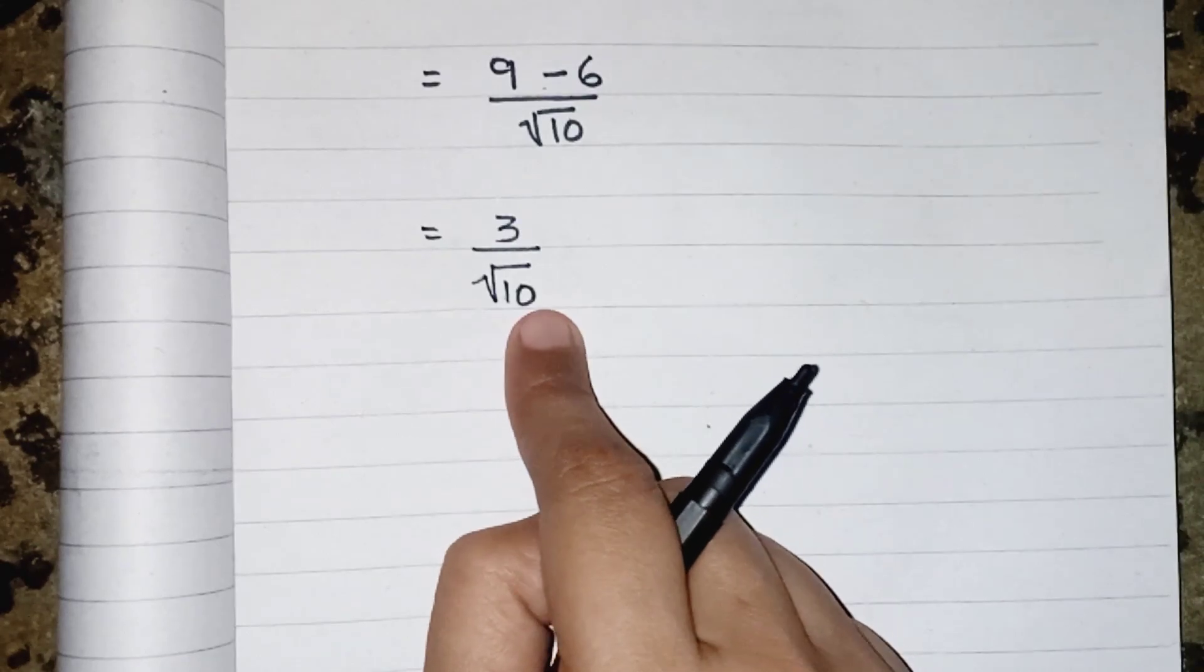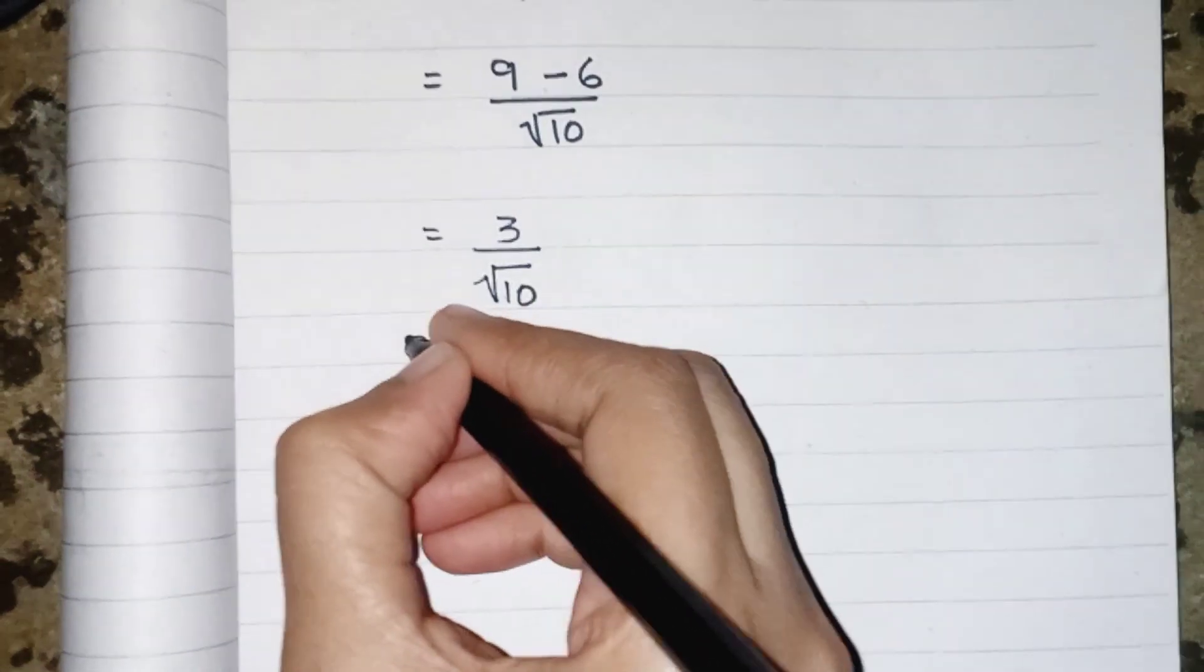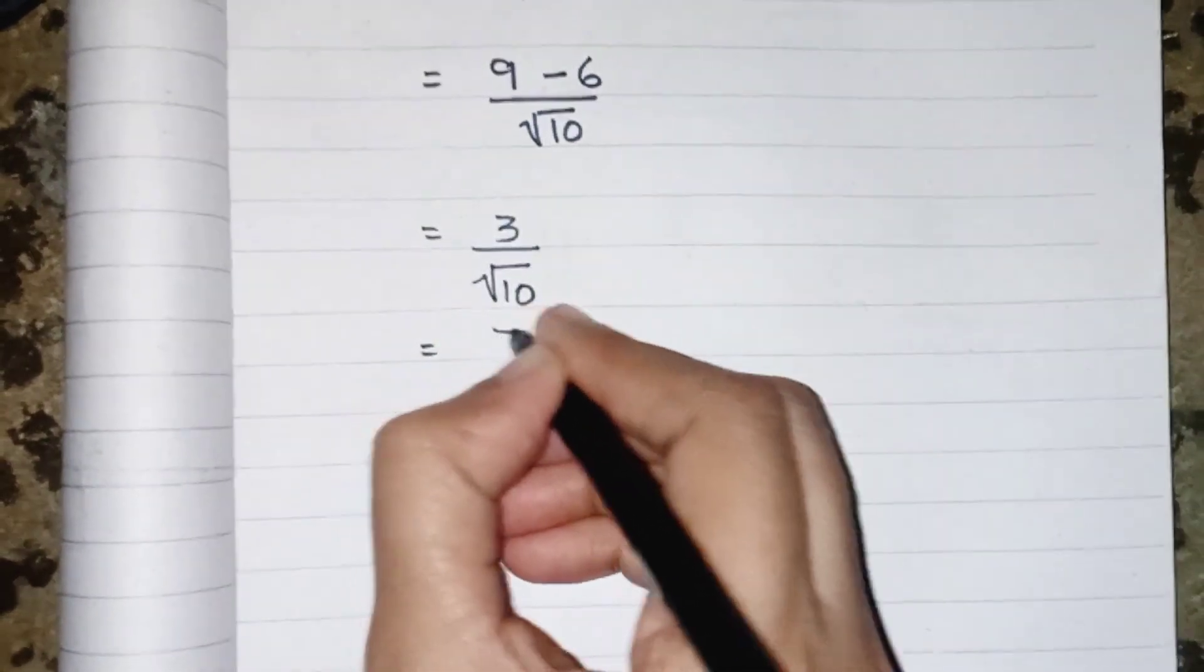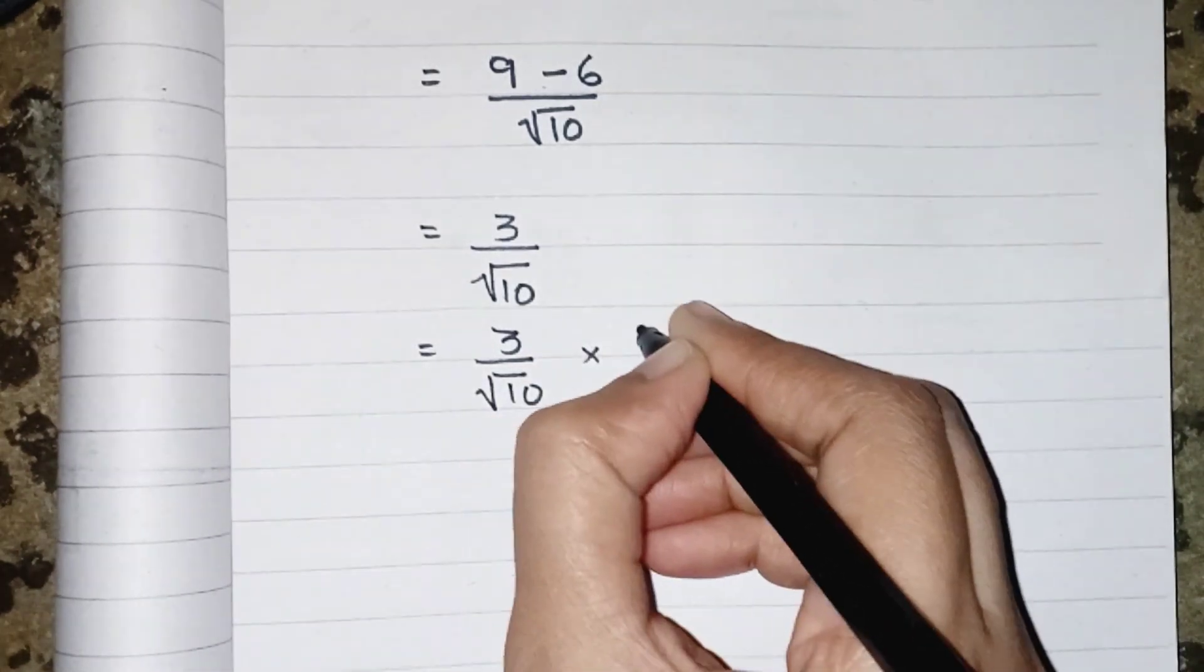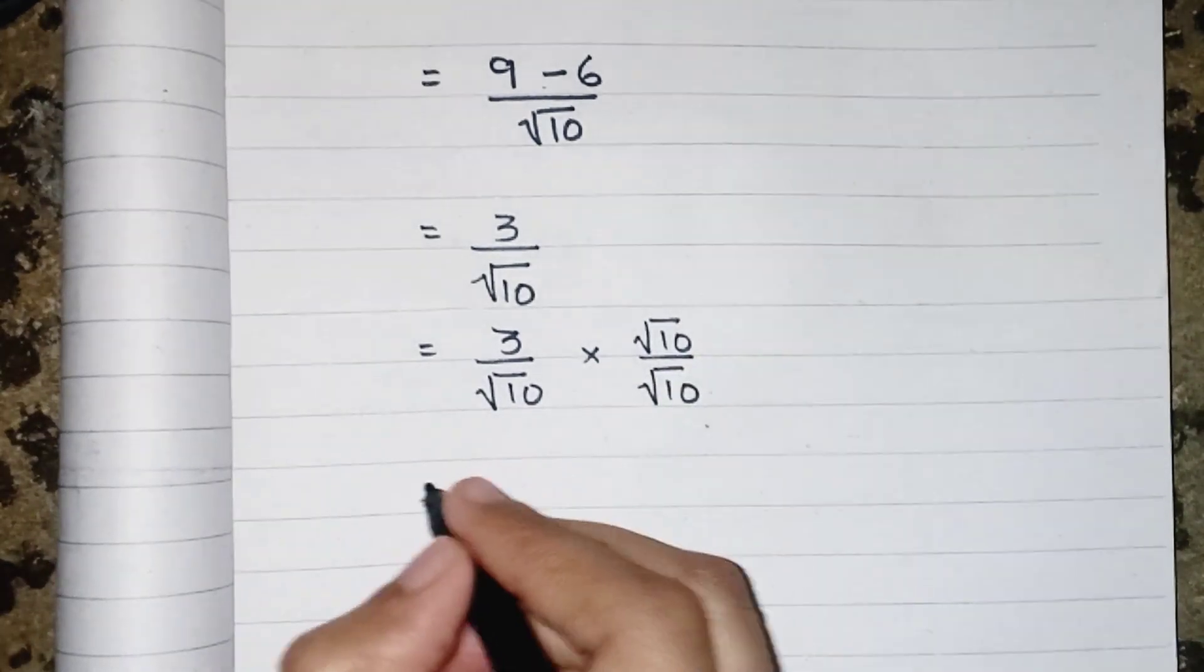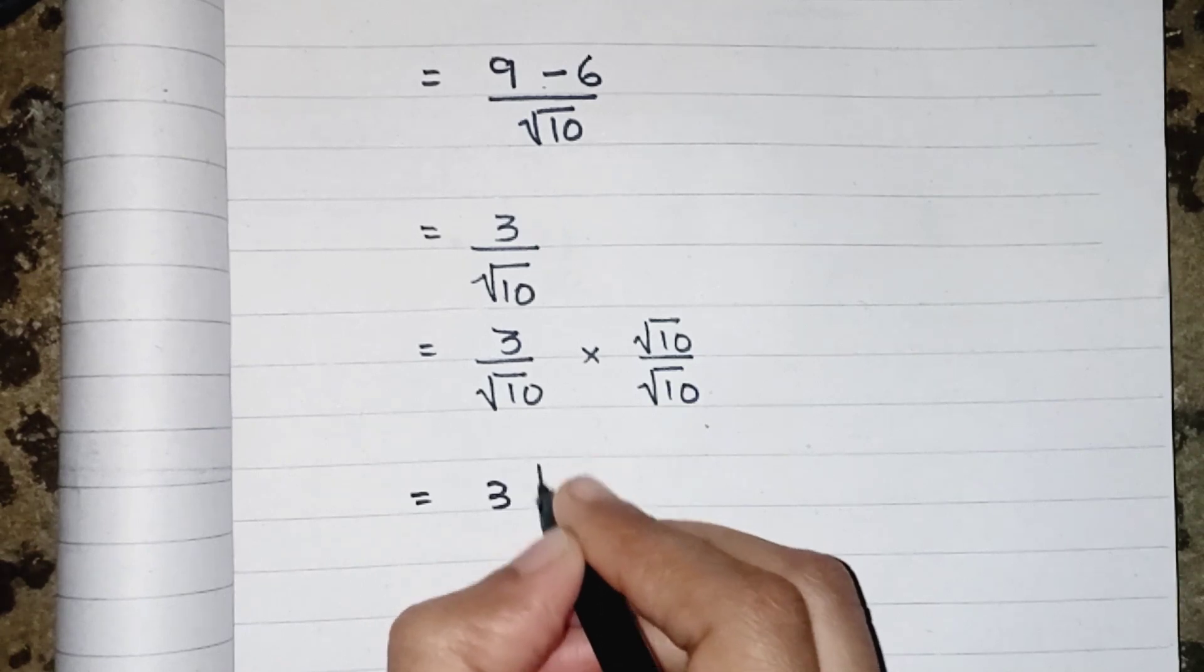So we must have to multiply and divide by the root 10 to rationalize it. So we can say that numerator multiply by numerator, so it will give us 3 root 10.